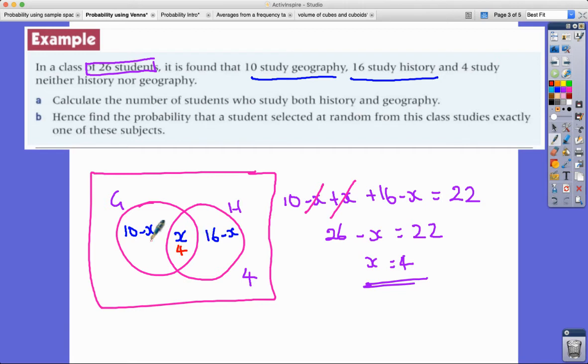Done. So from there I've done it - this is 4, that means that 10 minus 4 this must be 6 and 16 minus 4 this must be 12.